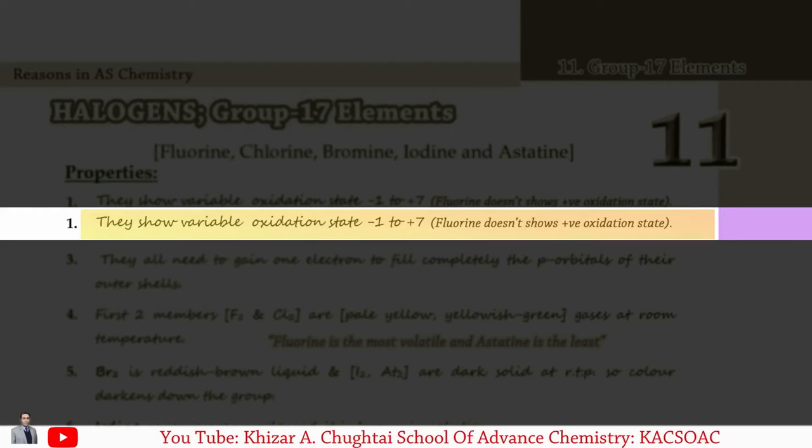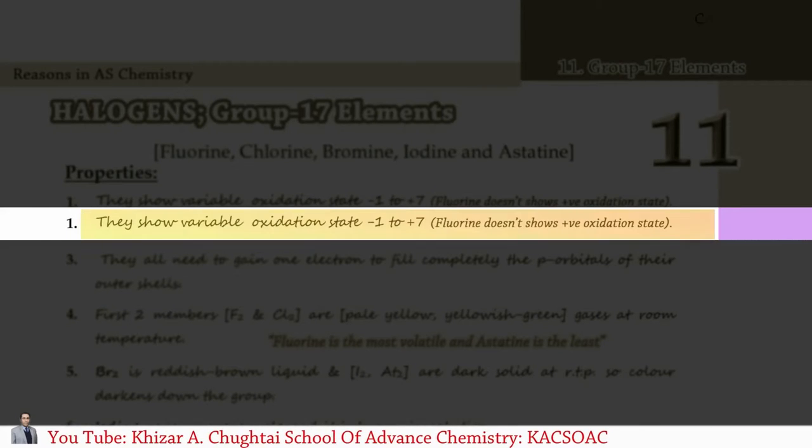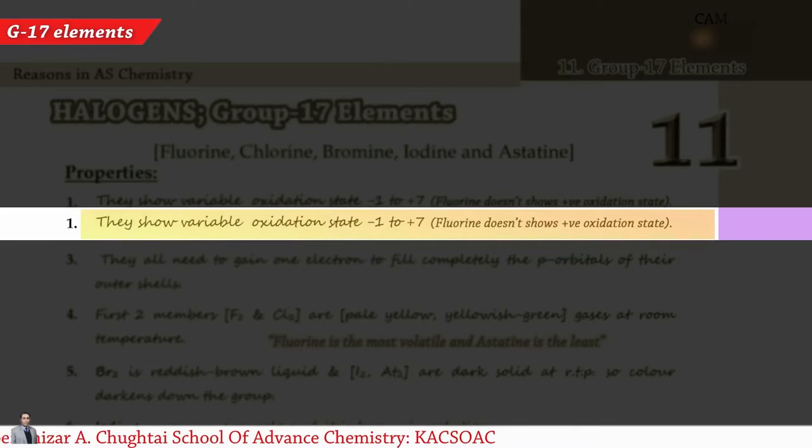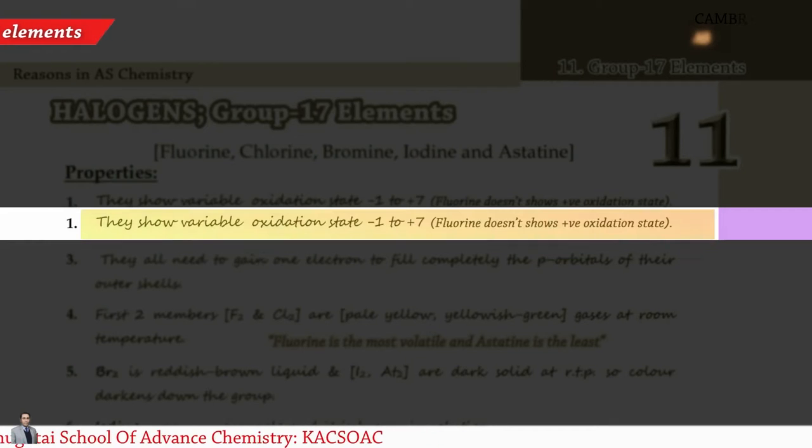Property 1: They show variable oxidation states starting from minus 1 to plus 7, but fluorine does not show any positive integer or positive oxidation state.